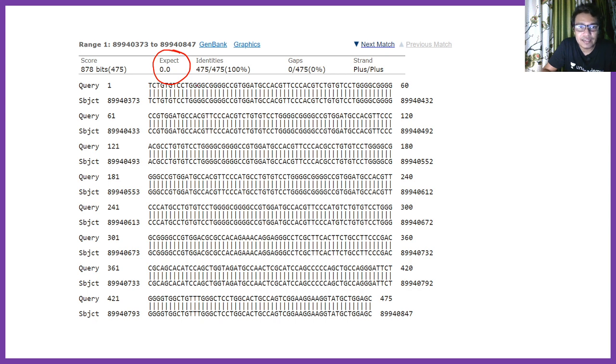So they said expect score is zero, then identities is something, a number divided by something a number, that means it's like 100% identical. So the match is a complete match. They said how many gaps? Since the match is complete, there would be no gaps. And which DNA strand it matches to, it also gives that kind of information.